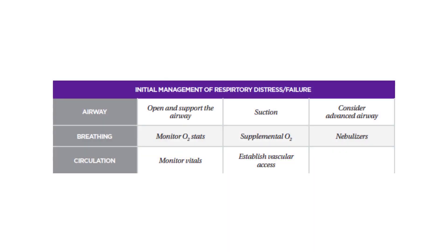Initial management of respiratory distress or failure includes opening and supporting the airway, suctioning, and considering advanced airway. Management of breathing includes monitoring oxygen stats, getting supplemental oxygen, and nebulizers. Management of circulation involves monitoring vital signs and establishing vascular access.